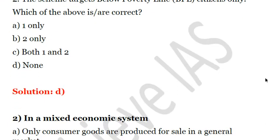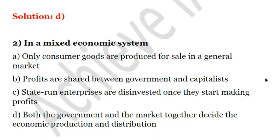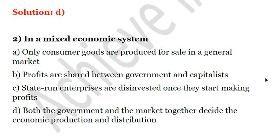Second question is: in a mixed economic system, A. Only consumer goods are produced for sale in the general market. B. Profits are shared between government and capitalists. C. State-run enterprises are disinvested once they start making profits. D. Both the government and the market together decide the economic production and distribution. The answer is D — both government and market together decide what is to be produced and how it is to be distributed.